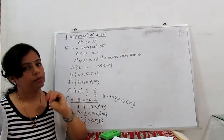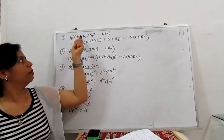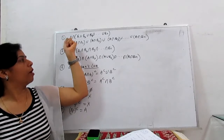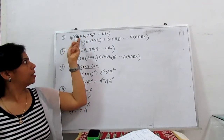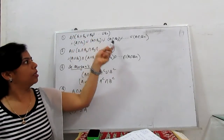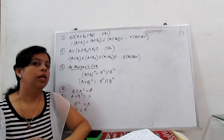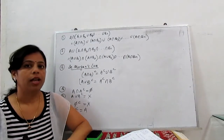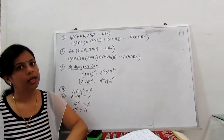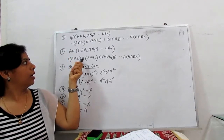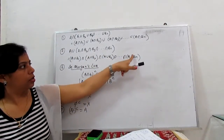Some more properties of sets: if we have the union of sets B1, B2, B3, ..., Bn, then A intersection (B1 union B2 union B3 ... union Bn) equals (A intersection B1) union (A intersection B2) union ... union (A intersection Bn). Similarly, A union (B1 intersection B2 intersection ... intersection Bn) equals (A union B1) intersection (A union B2) intersection ... intersection (A union Bn). These are the distributive laws.